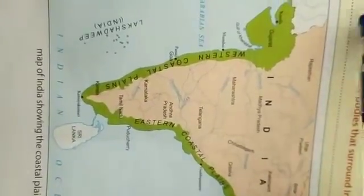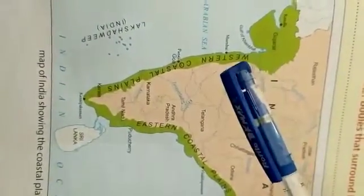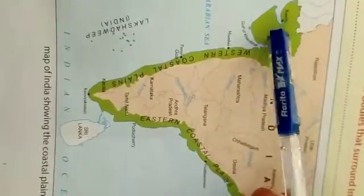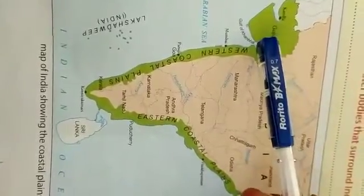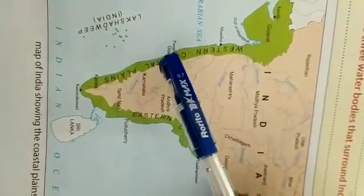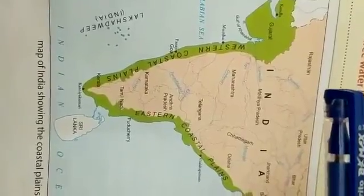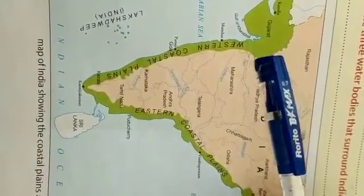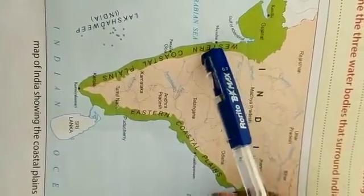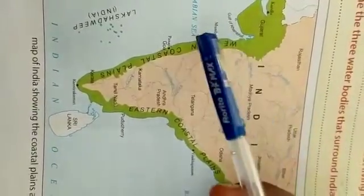Let us study about the Konkan coastal plain. This coastal plain extends from the Gulf of Kambath till Goa. The states which are included in this coastline include Maharashtra, Goa, and Karnataka.